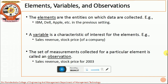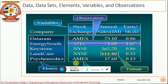Elements are the entities on which the data are collected. The various companies in the previous example are called as elements. A variable, as the name suggests, is a characteristic of interest which varies for the different elements, like the sales revenue and the stock prices. These are called as variables. The set of measurements collected for a particular element is called as an observation. For this OTC stock exchange, the annual sales in millions is 74 and the share holding earnings is 1.67.